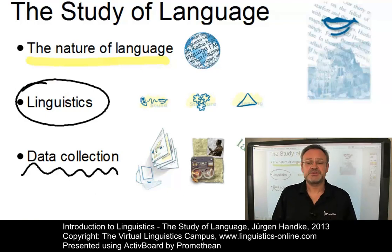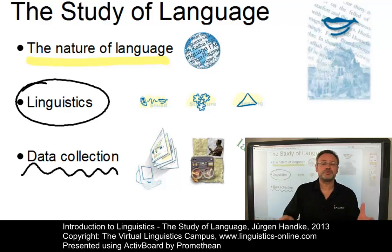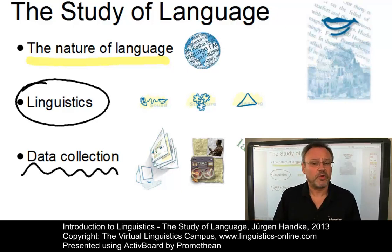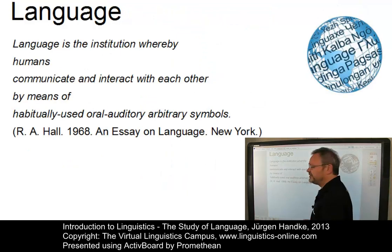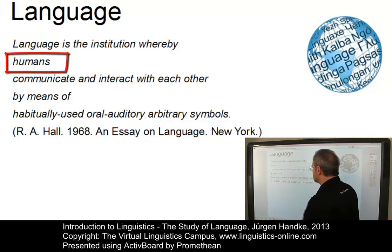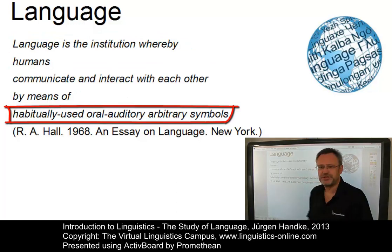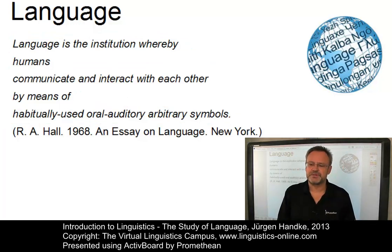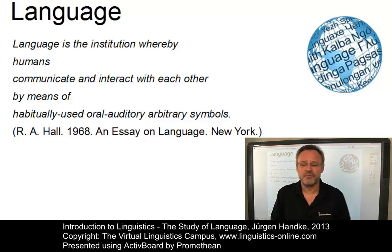This e-lecture is introductory on the one hand, but also wants to provide additional information for students with some linguistic background. Let us start with an overview of the term language. Here is a relatively old definition: language is the institution whereby humans communicate and interact with each other by means of habitually used oral, auditory, arbitrary symbols. This definition contains a number of keywords, so let's look at these keywords more closely.